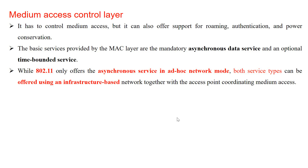Now we move to the medium access control layer — the MAC layer. As already discussed, it supports roaming, authentication, and power conservation mechanisms. Other services provided by the MAC layer include two types of services: asynchronous data service and an optional time-bounded service. IEEE 802.11 offers asynchronous service in ad hoc network mode, and offers both asynchronous data service and time-bounded service in infrastructure mode.